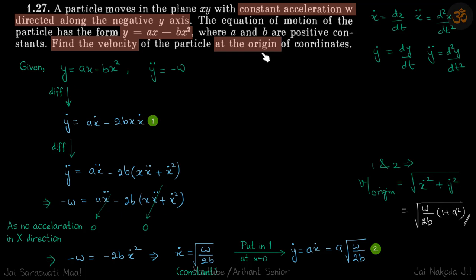Now we need to find the velocity at origin. We've found the velocity in the x direction, now we need to find the velocity in the y direction. Then we can just square and add and take the root to get the total velocity. To find y dot, we already know what is x dot, so we'll put that here. We need to find it at origin, so x we can put as zero. This term will vanish, so y dot will be ax dot, which is a times root of w by 2b.